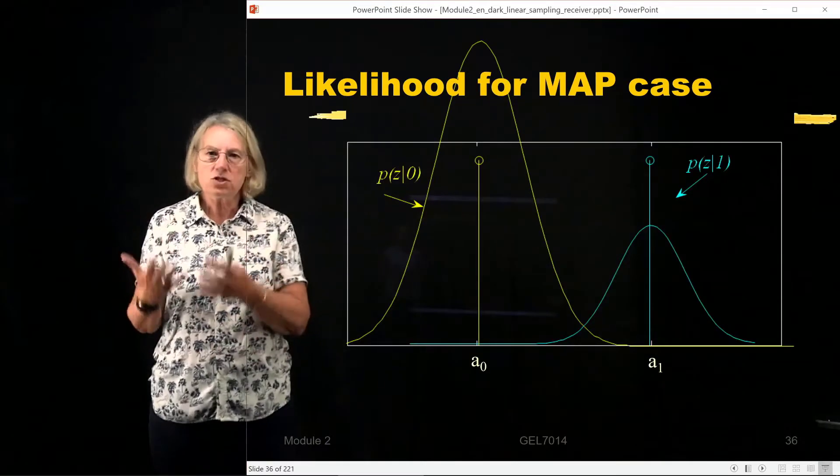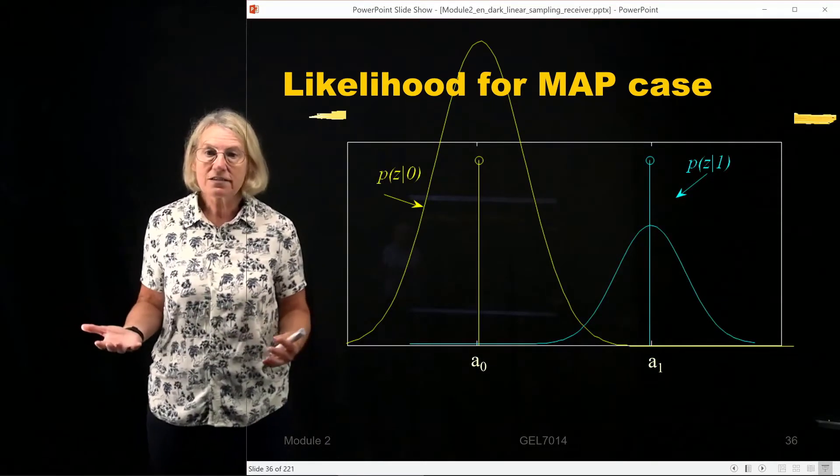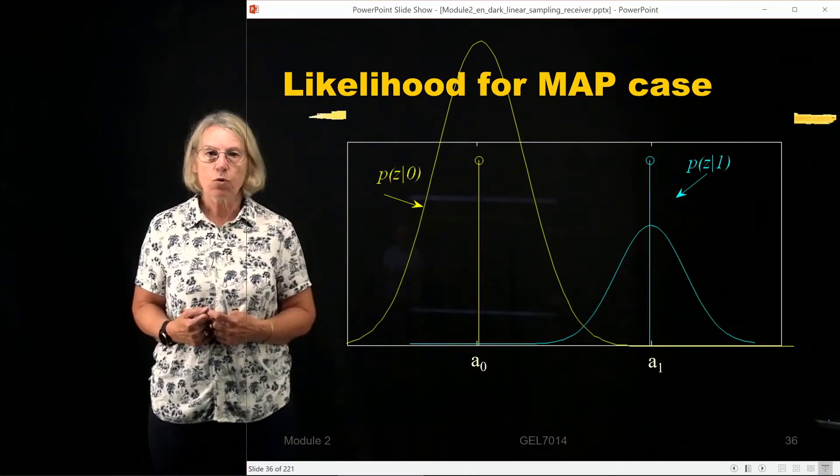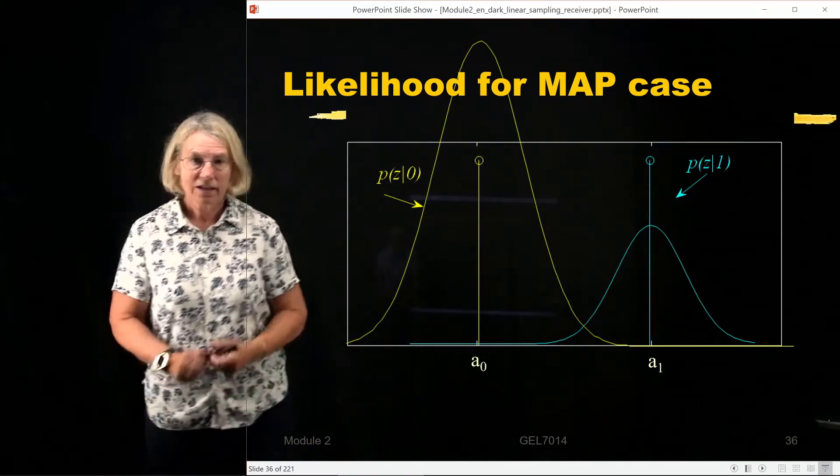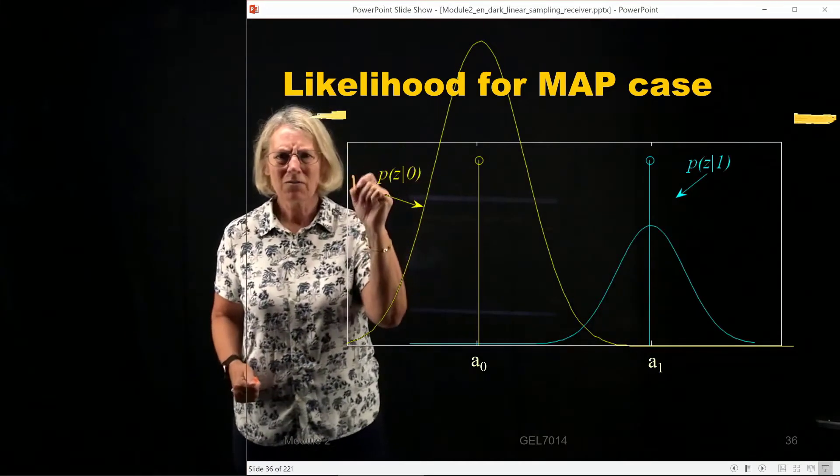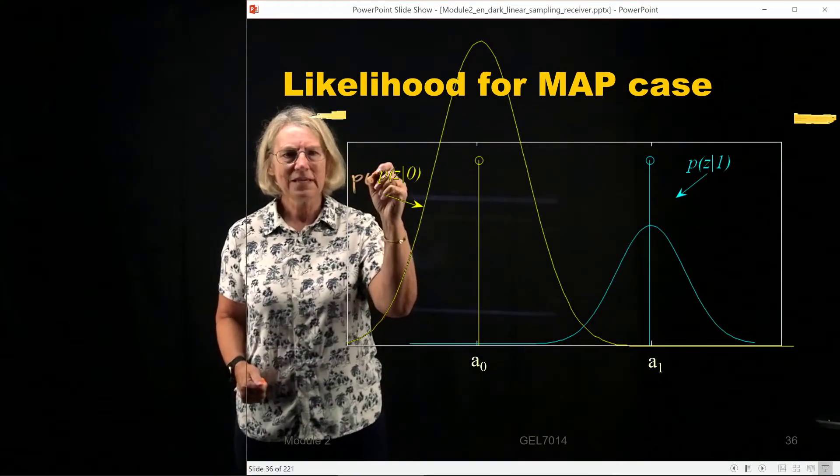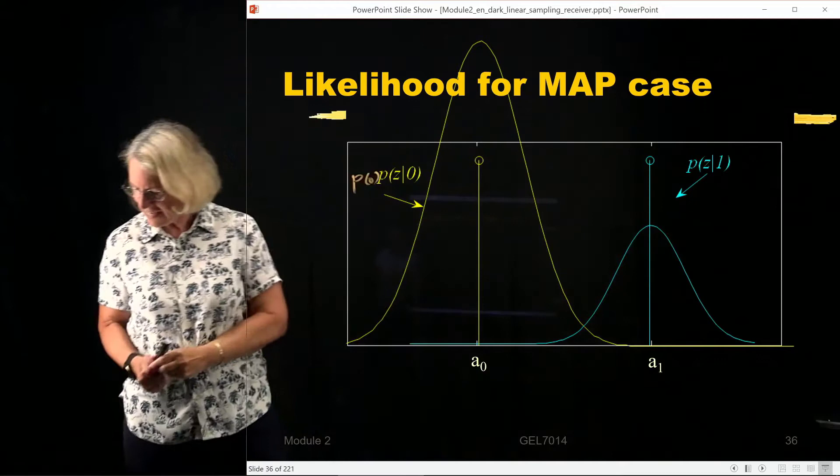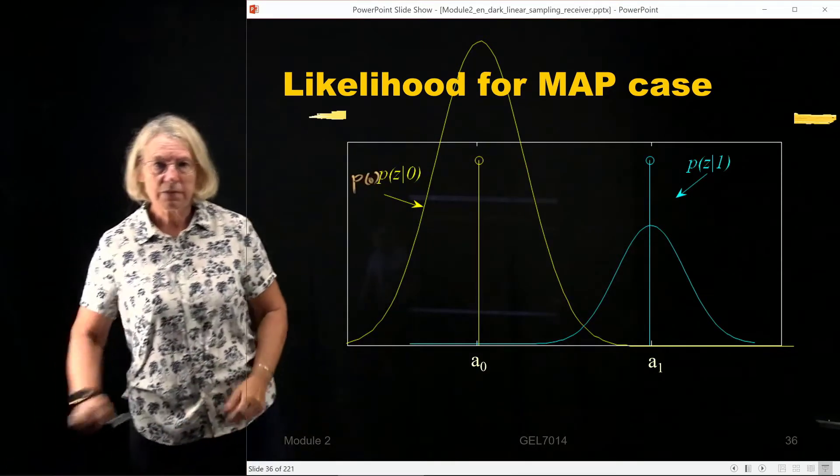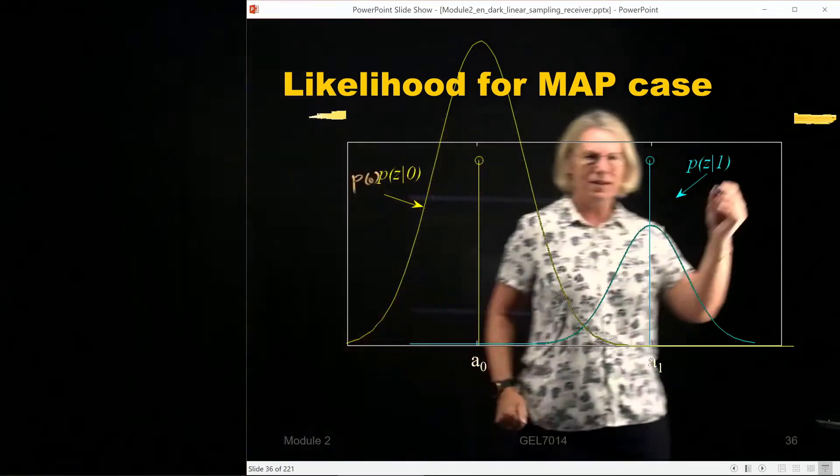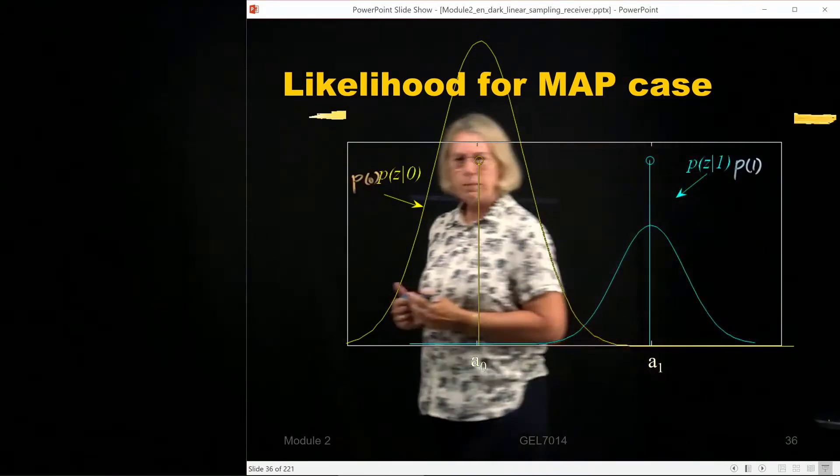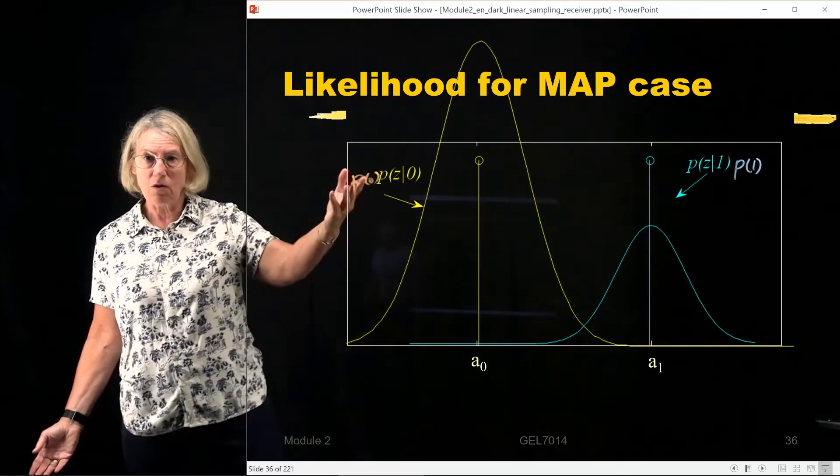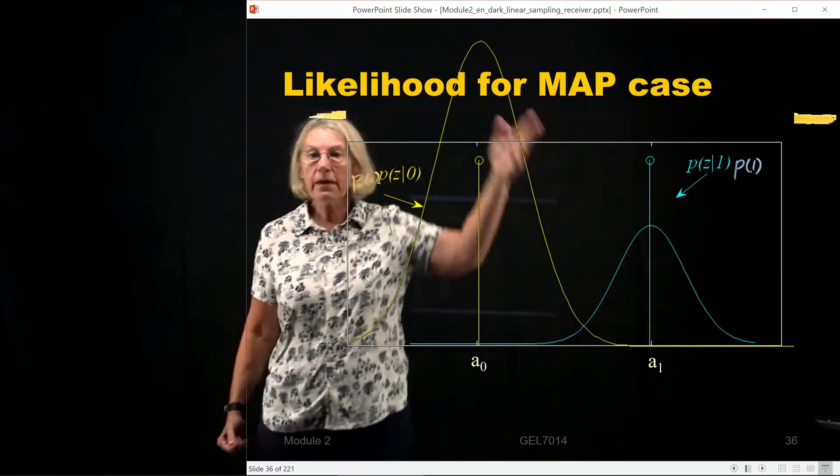So let's look at our plot and what it would look like now for this product. Here we're multiplying by P0, and in the other case it's being weighted by P1. So because of this weighting, let's say the zero is more likely, it will be bigger.